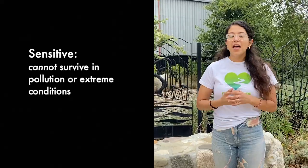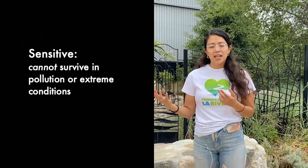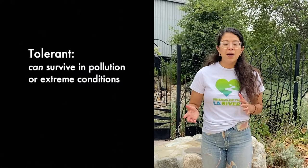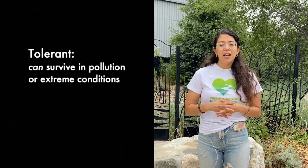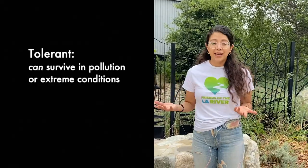When a critter is sensitive, that means they can't really tolerate a lot of different conditions. They can't tolerate poor water quality — they don't survive, they can't make it, their shells may dissolve. When a macro is tolerant, that means they can handle different conditions, maybe conditions that are not so great. And there are also macros that are in the middle — somewhat tolerant, somewhat sensitive.